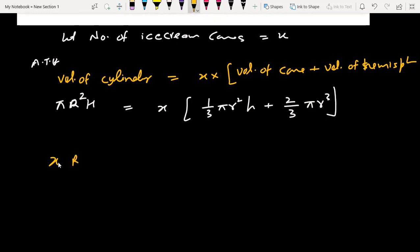We can factor this. Taking 1/3 πr² common, we get 1/3 πr² times (h + 2r). Now we substitute the values. π cancels on both sides.